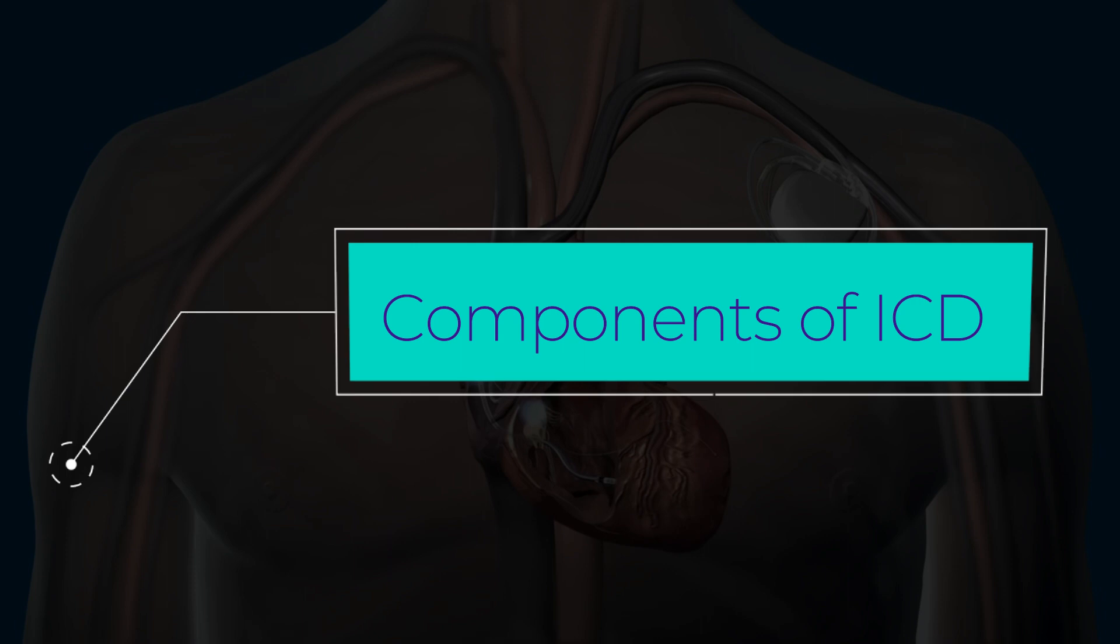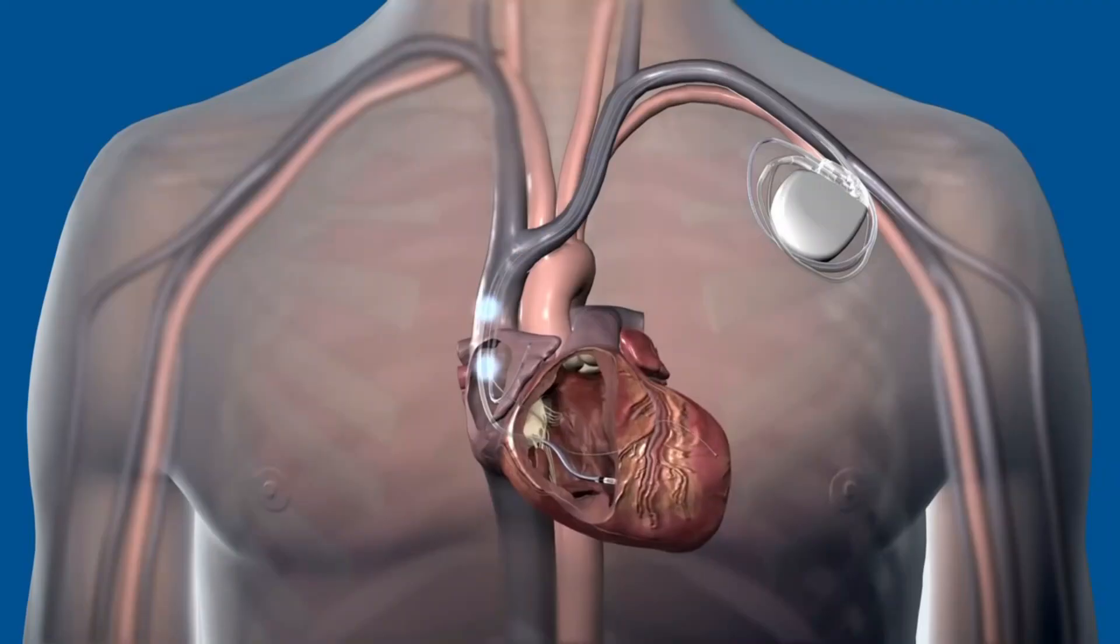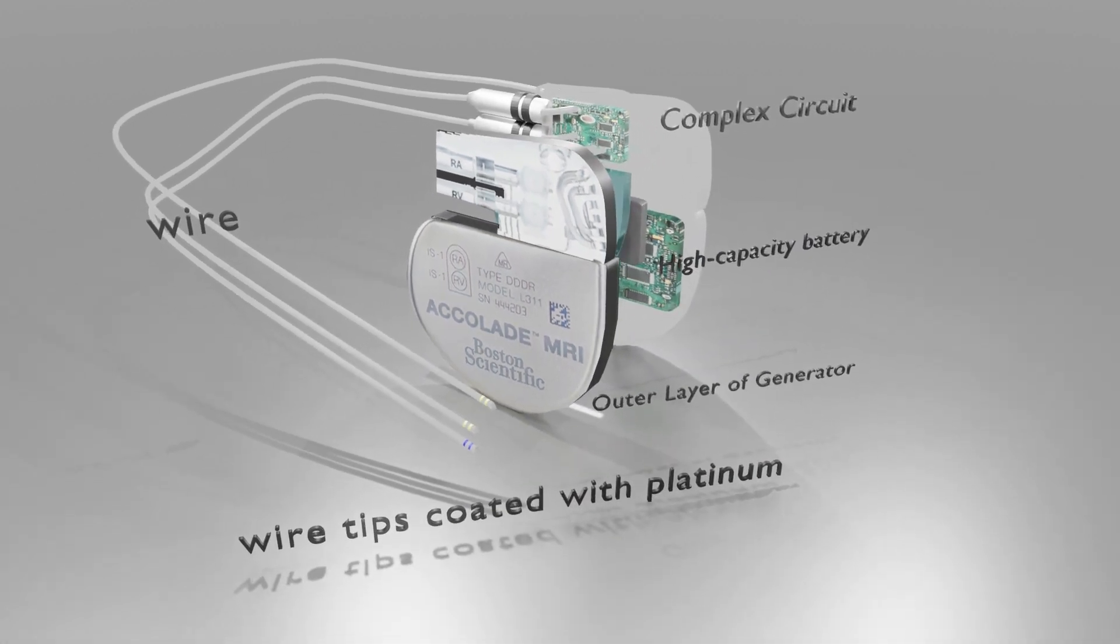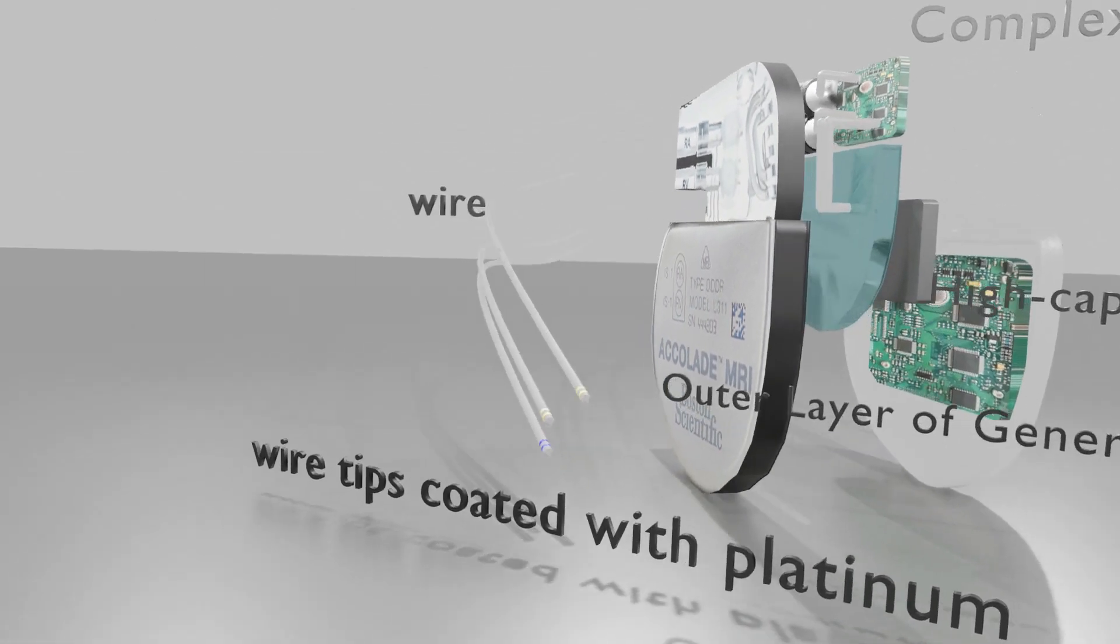Let's look into the components of an ICD. The ICD mainly consists of an outer layer of the generator, complex circuitry, a high-capacity battery, the wires with electrodes, and the capacitor. The first component is the outer layer of the generator. It is made of titanium and other metals, with complex circuitry and a high-capacity battery inside. The wires have inner conductors with outer silicone and polyurethane insulation. The tips of the leads are usually coated with platinum or another similar metal.